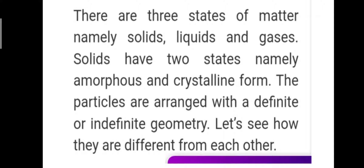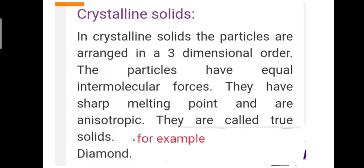In crystalline solids, the particles are arranged in a three-dimensional order. The particles have equal intermolecular forces, they have a sharp melting point, and they are anisotropic. Crystalline solids are called true solids. For example, diamond.